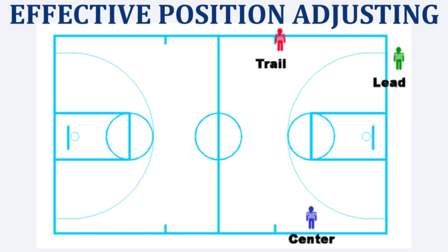Officiating basketball is all about getting the best angle to see the play. When we are taught our initial positions on the court, we know that the trail official position is at the 28-foot mark, the center official is at free throw line extended, and the lead — as stated in the previous video — depends on the ball location, whether we are in close down or in wide angle. Those are our initial positions, but in order for us to continue to see plays from start to finish, we have to adjust our positions to get the best angle. Let's check out these videos where the official effectively adjusted their position to see the play.